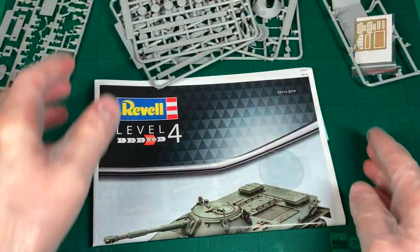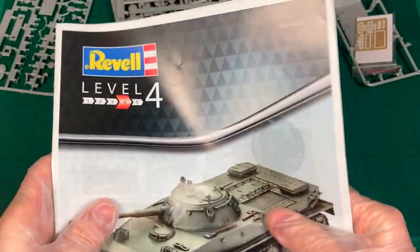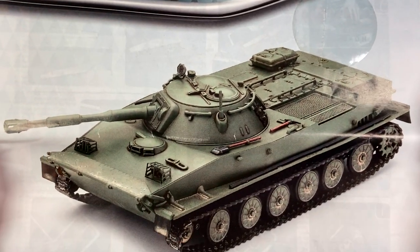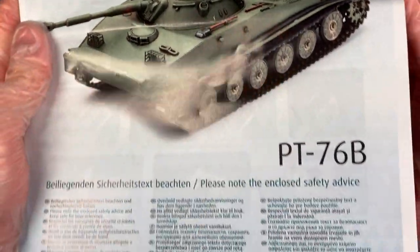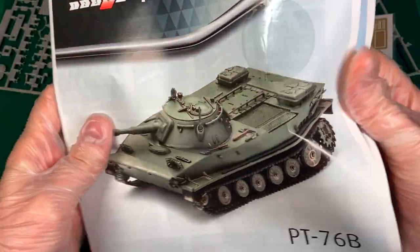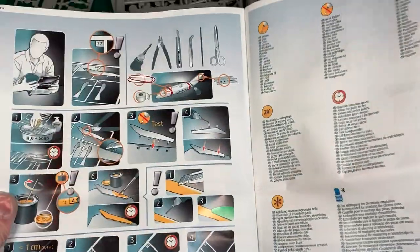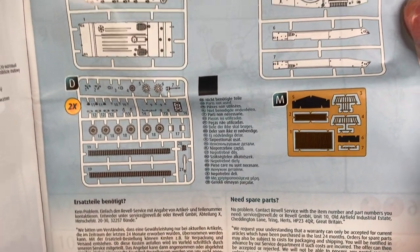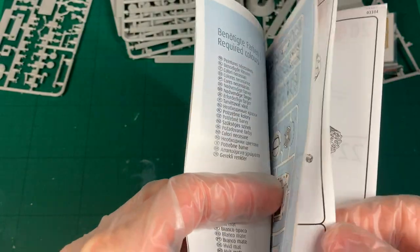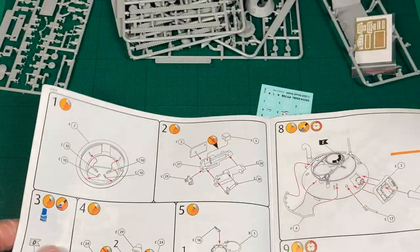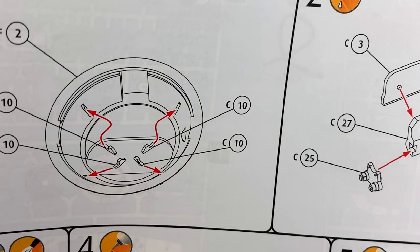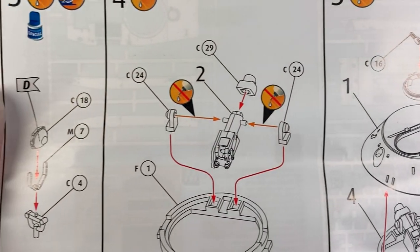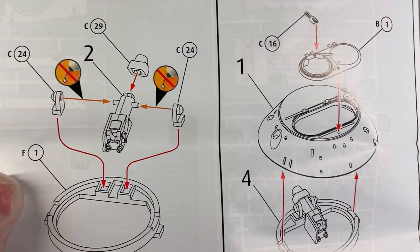Let's have a look at the instructions. So this is a level 4 and you think to yourself well this is a PT-76, look how simple it looks on the front. Why would it be a level 4 you say? Well look at the first page. You can see a lot of parts and some PE parts included. Yep, photo etch. When we look at the first page straight away you can see tiny detail inside the turret. This is definitely a level 4. You're going to have to take a lot of time with this one but I think it will be a very fun build indeed.